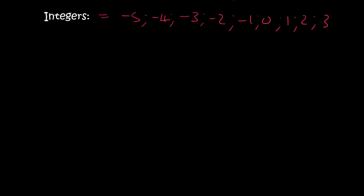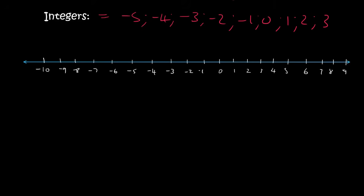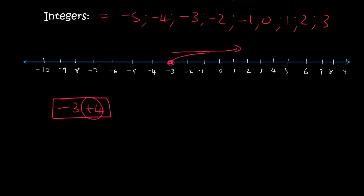Now we're going to do some integer calculations. To help you out in the beginning, I'm going to draw a number line. The first calculation is going to be minus 3 plus 4. So if you are at minus 3, whenever you plus, you must go to the right. So if you add 4, you would end up at 1. So minus 3 plus 4 is equal to 1.